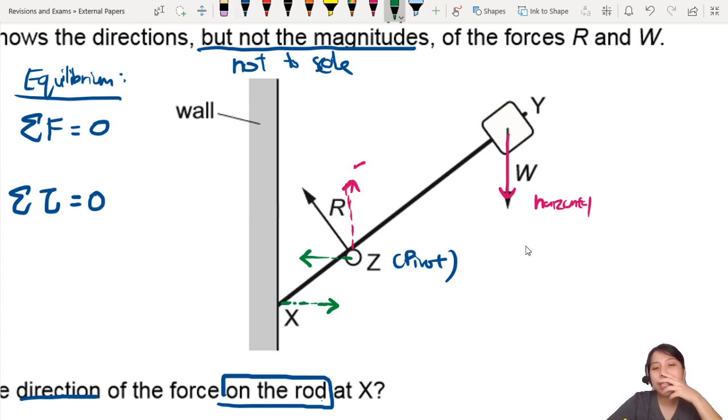Because if I choose Z as a pivot, then I can see what is the force at X that contributes to the overall moment. And I don't have to worry about the forces at R. So if I take Z as the pivot, so let me wrap up these things.